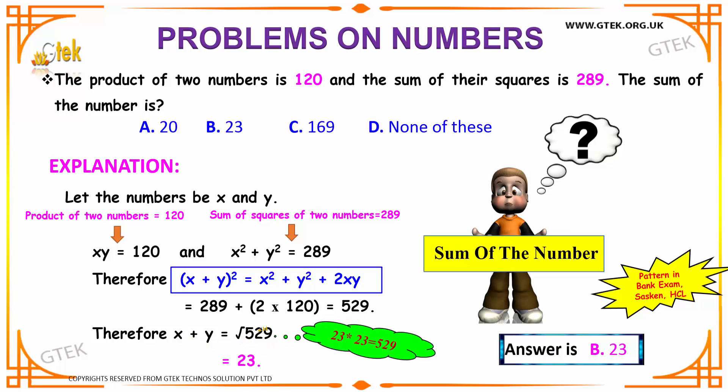X plus Y is equal to square root of 529. 23 into 23 is 529. Hence, square root of 529 is nothing but 23. Hence, option B, 23 is your answer.